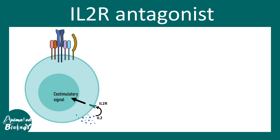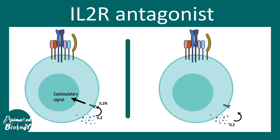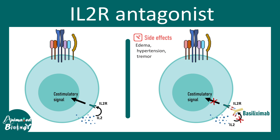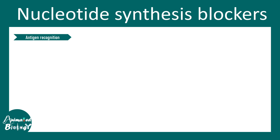IL-2 receptor antagonists work by blocking IL-2, which provides the co-stimulatory signal for T cell activation. A monoclonal antibody known as basiliximab can prevent IL-2-mediated co-stimulatory signaling. Without this signal, T cell proliferation is blocked, preventing autoreactive T cell generation. Side effects include edema, hypertension, and tremor, but these are mild compared to many other immunosuppressants.